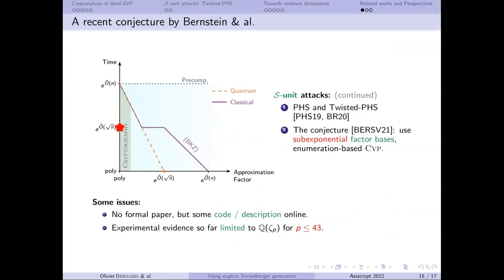I mention a recent conjecture by Bernstein, Eisentrager, Rubin, Silverberg, and Van Grendendal. The two main ideas are to use a sub-exponential factor basis and an enumeration-based closest vector problem oracle using many small S-units, claiming a polynomial approximation factor in sub-exponential time. This has given rise to many debates. There is no formal paper, but code and description are online. The experimental evidence so far is limited to prime conductor cyclotomic fields of degree less than 42, which may be subject to the same small-dimension effects as Twisted PHS.